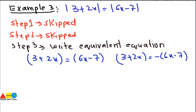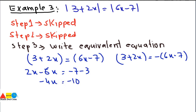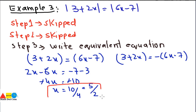Solving the first equation 3 + 2x = 6x − 7: rearranging gives 2x − 6x = −7 − 3, so −4x = −10. Cancelling, x = 10/4 = 5/2. The first root is x = 5/2.